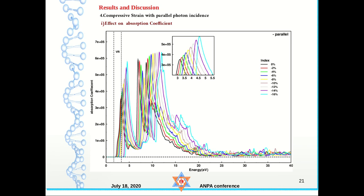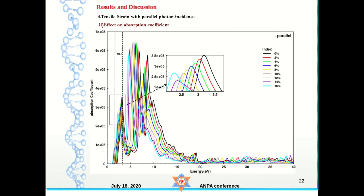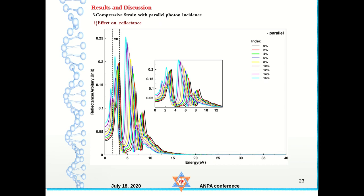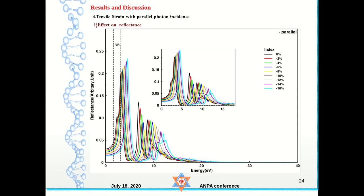The absorption coefficient also changes drastically with strain, and the changing pattern is clear in the figures. This also changes similarly under tensile strain. The reflectance also changes — the threshold value increases after applying compressive strain. After 20 to 22 eV, the material remains transparent regardless of applied strain. The reflectance threshold value shifts slightly under tensile strain as well.